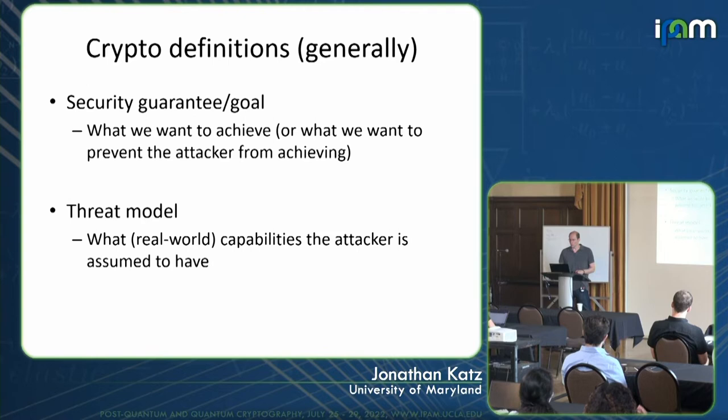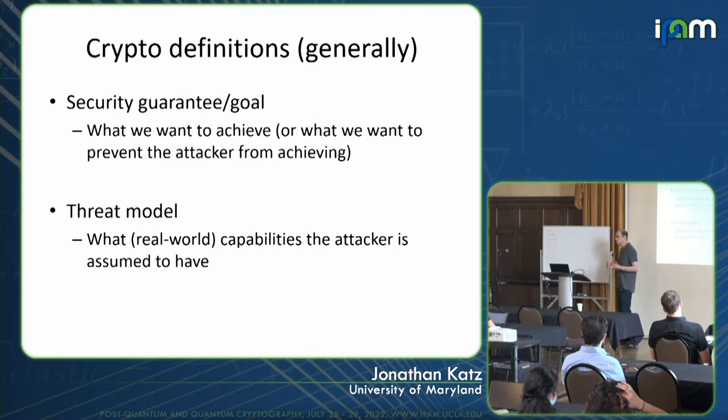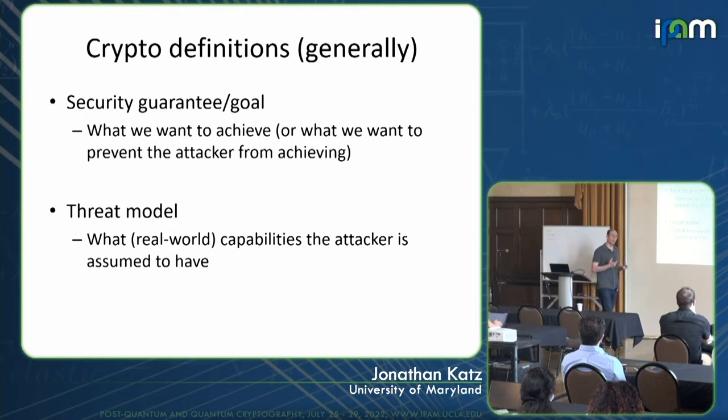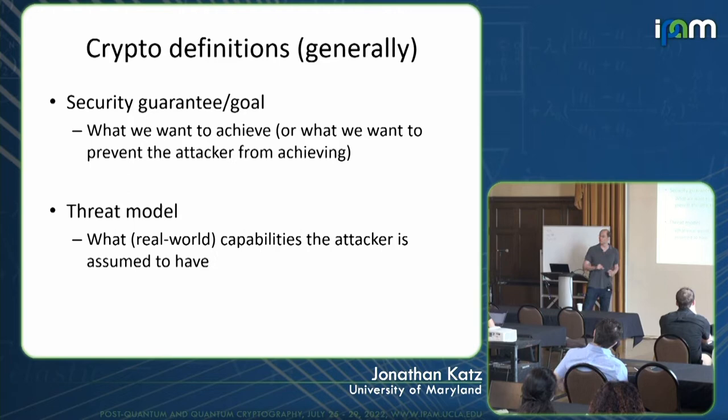When we come to crypto definitions, there are generally two parts. One part is thinking through what the security goal is — what kind of guarantee we want to provide, or what we want to prevent the attacker from achieving. Then we also want to think through the threat model: what real-world capabilities are we assuming the attacker has, and making sure we build those capabilities into the definition. We'll see this as we develop several different definitions of security for private key encryption.